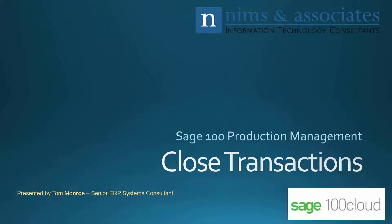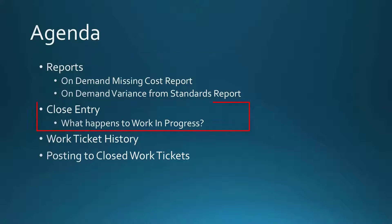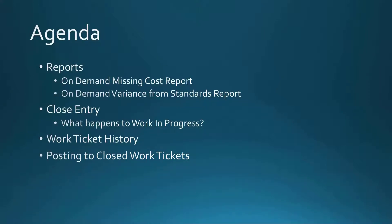Let's take a look at our agenda. First, we're going to talk about the missing cost report and the on-demand variance from standards report. We'll take a look at the close entry, and we'll talk about what happens to work in progress, work ticket history, and posting to closed work tickets. Let's go ahead and go into Sage 100.